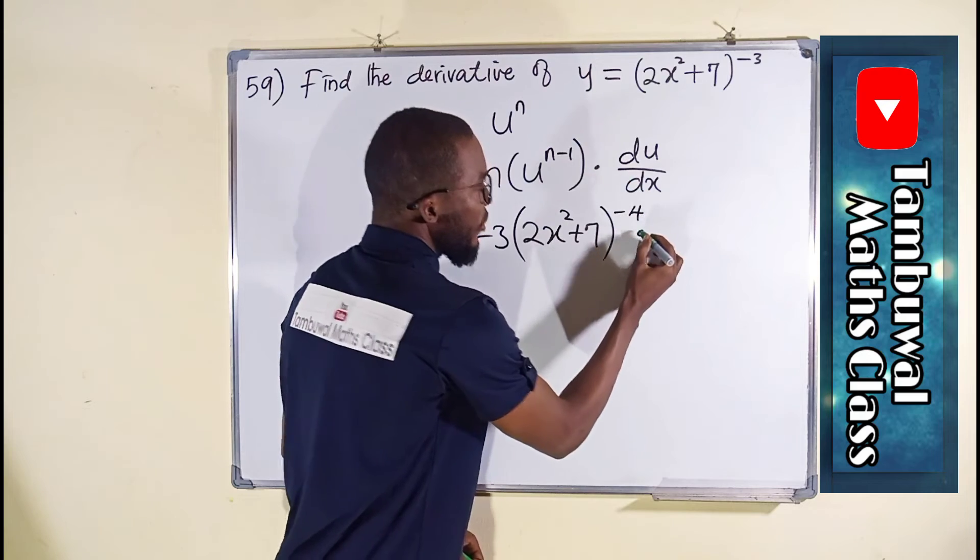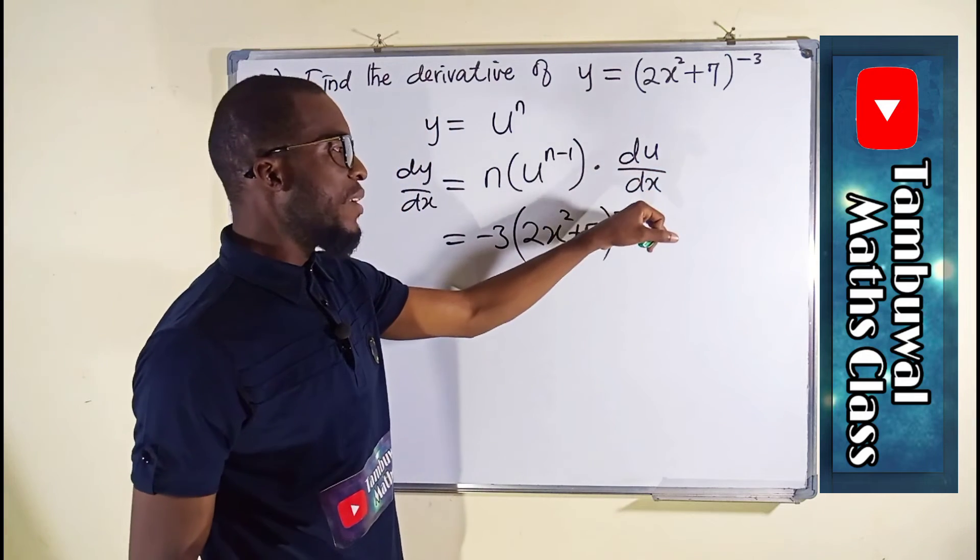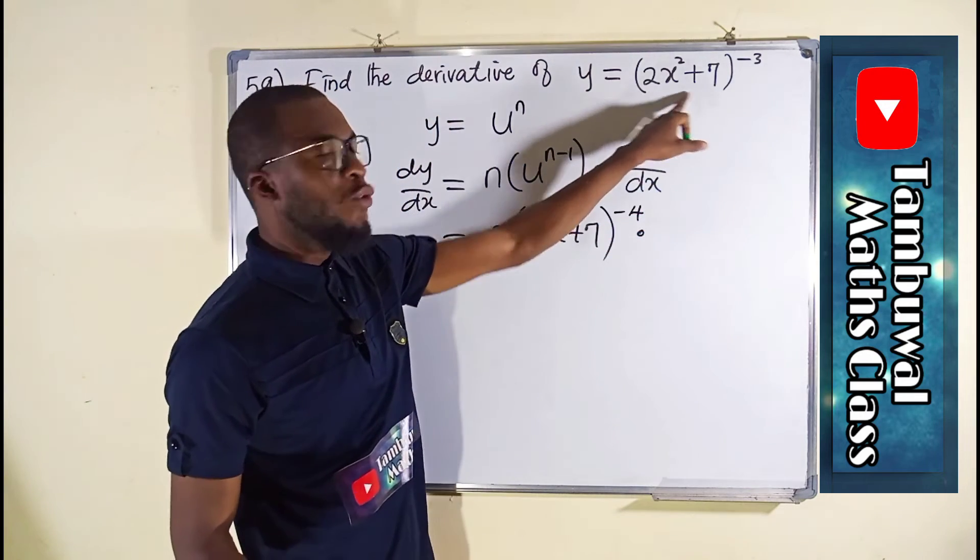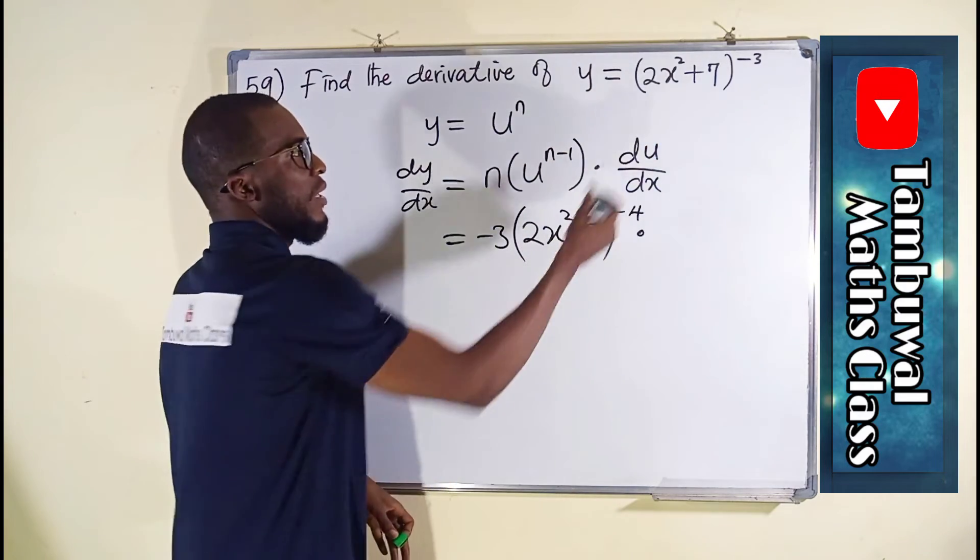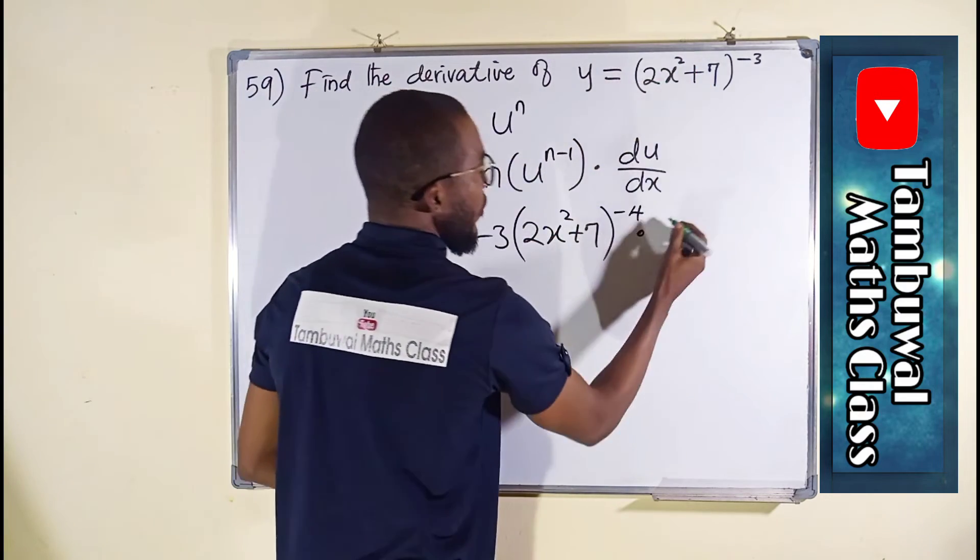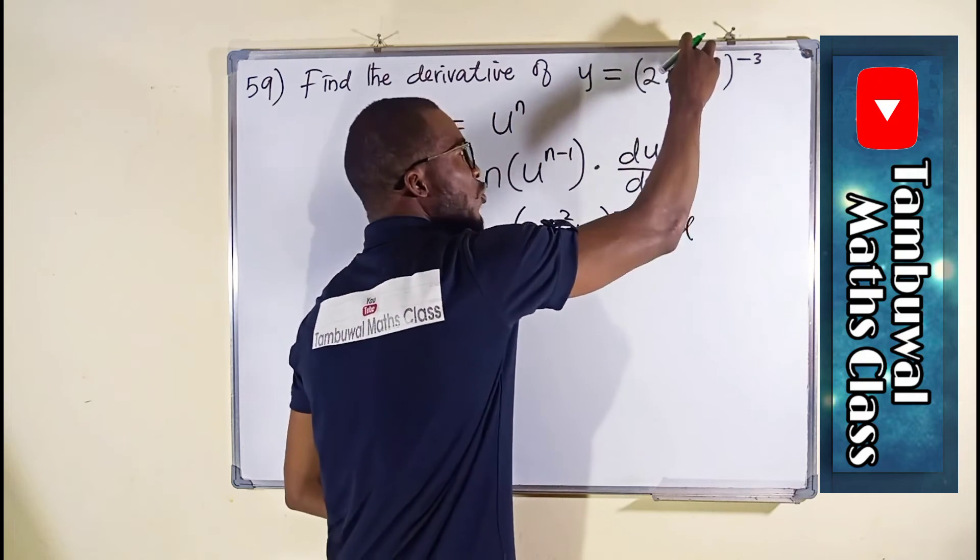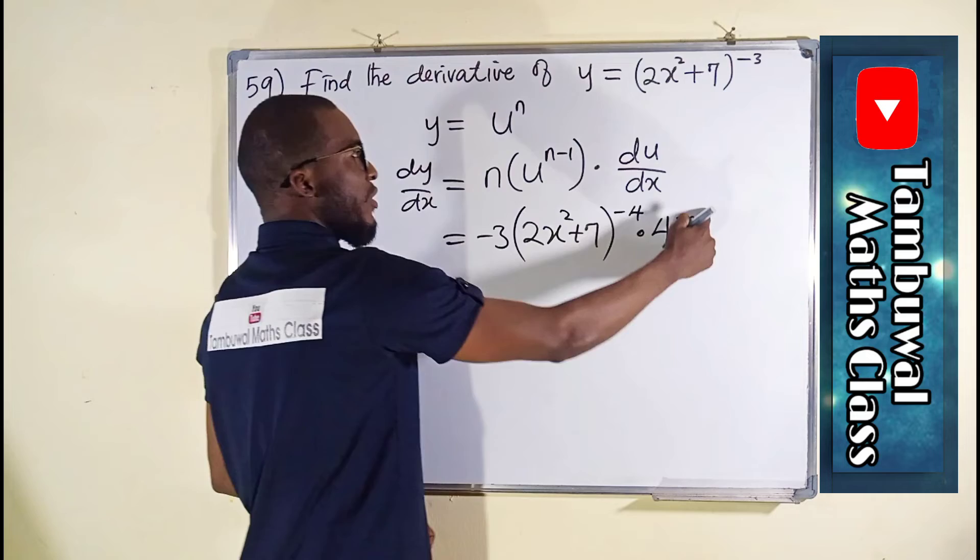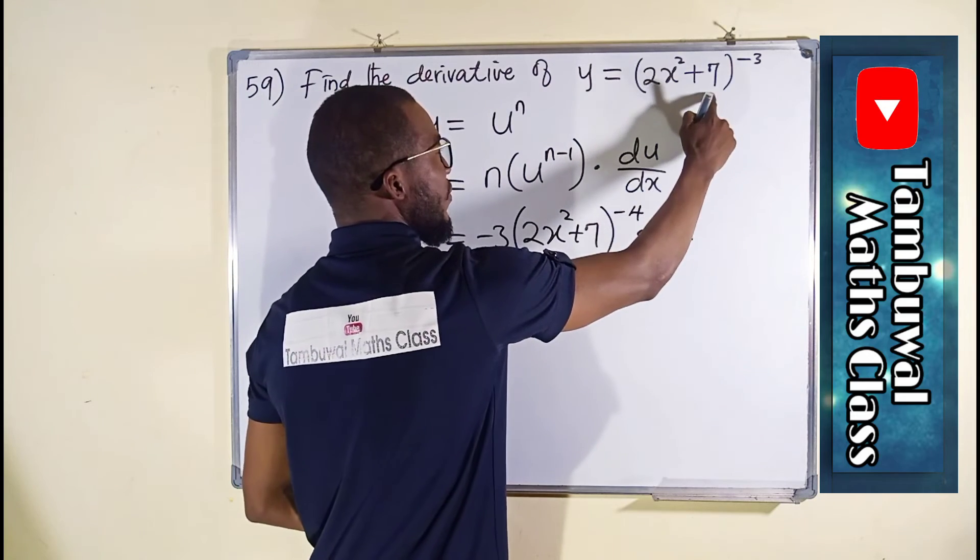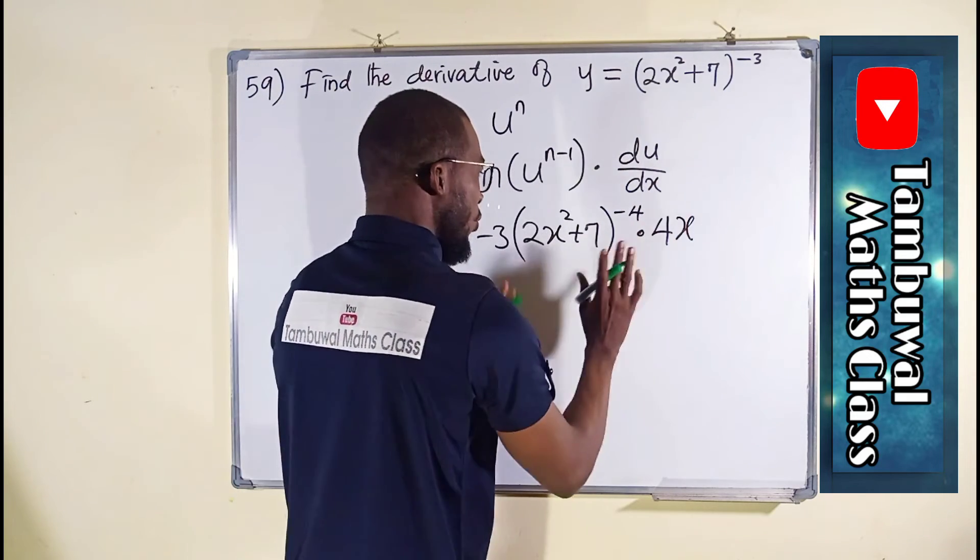Then this is multiplication, du over dx. This is our u, we are going to differentiate it with respect to x. This 2 will multiply this 2, and we obtain 4x raised to the power of 2 minus 1 is 1, so we don't have to write the 1, and you know that the derivative of constant is 0, so we stop here.